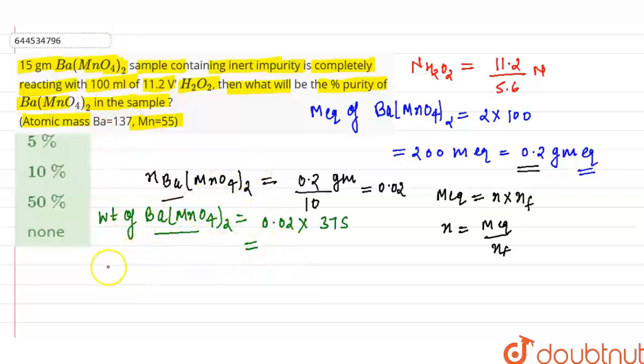And percentage of, now percentage purity we have to calculate here. Percentage purity of Ba(MnO4)2 is Ba(MnO4)2, weight which is 0.0, weight of Ba(MnO4)2 which is 0.02